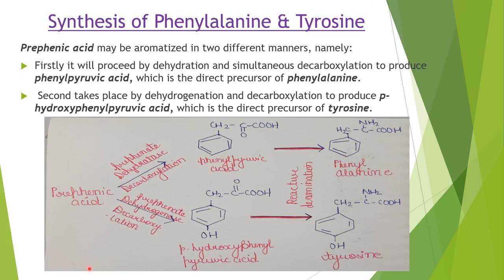Now we discuss the synthesis of phenylalanine and tyrosine. Prephenate may be aromatized in two different ways. First, it proceeds by dehydration and simultaneous decarboxylation to produce phenylpyruvic acid, the direct precursor of phenylalanine. Second, it proceeds by dehydrogenation and decarboxylation to produce para-hydroxyphenylpyruvic acid, the direct precursor of tyrosine.